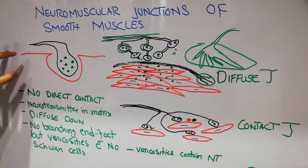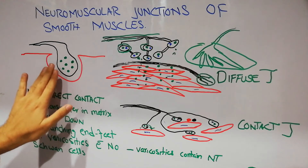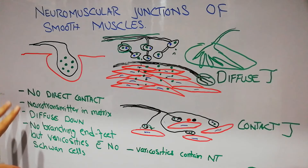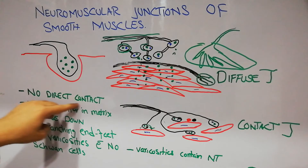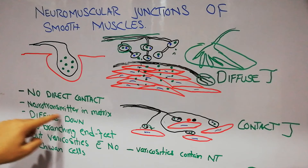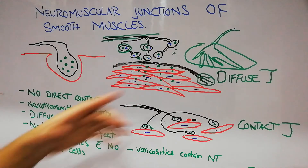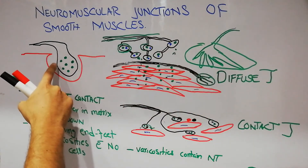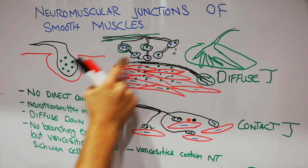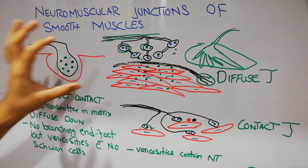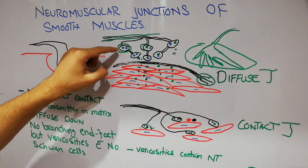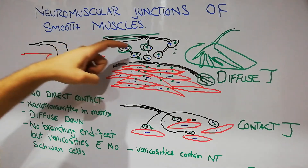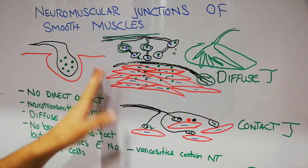To summarize: in skeletal muscle there is a proper neuromuscular junction with a synaptic cleft formed by nerve fiber penetration, and vesicles release neurotransmitter to excite the muscle. In smooth muscles there is no direct contact; in diffuse junctions, neurotransmitters are secreted into the connective tissue matrix. There are no branching end-feet but varicosities instead, and due to the absence of Schwann cells, transmitters can be secreted and activate all layers from top to bottom.